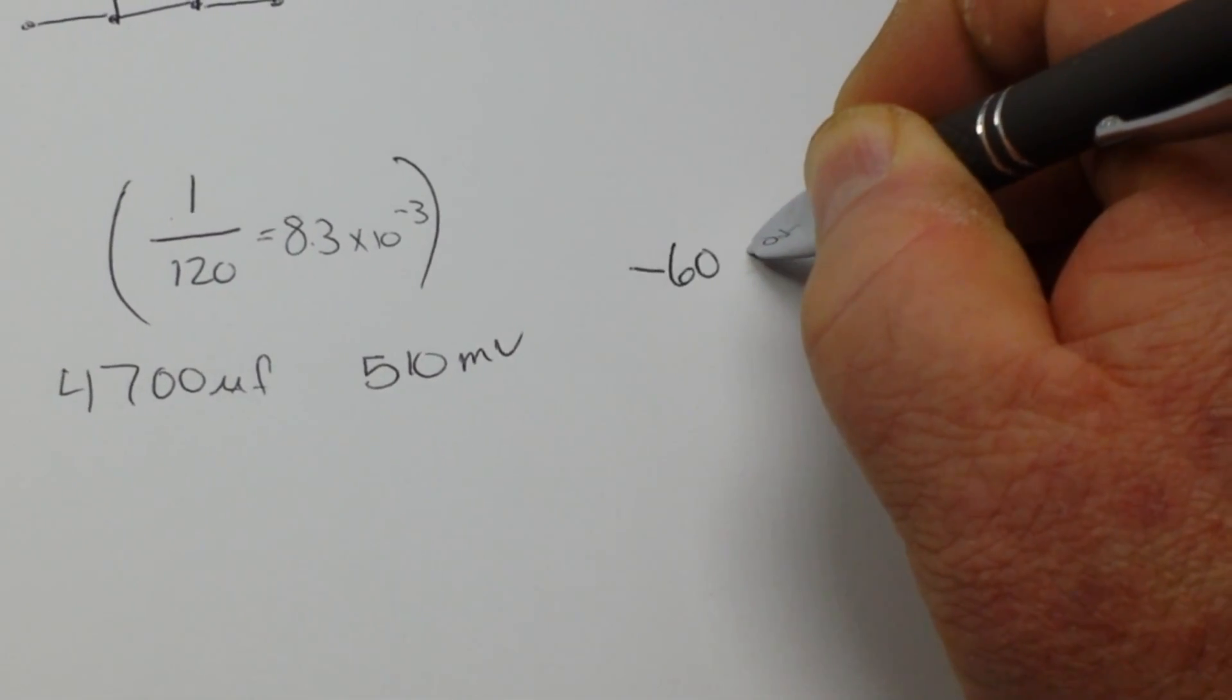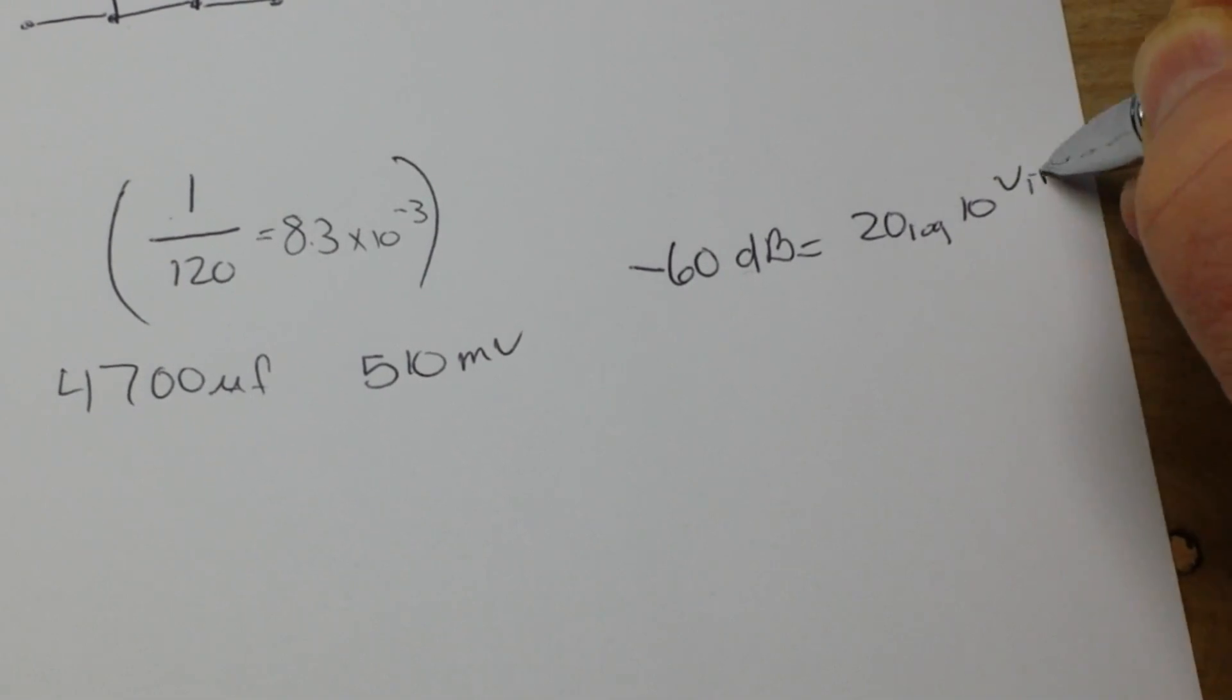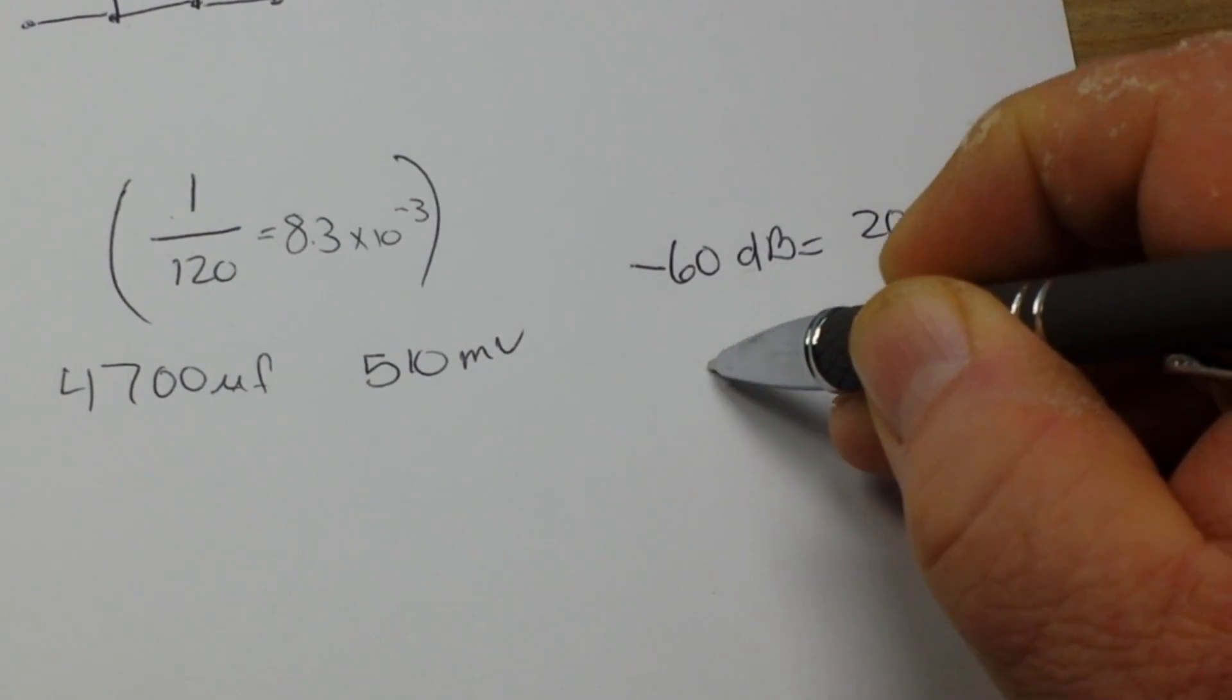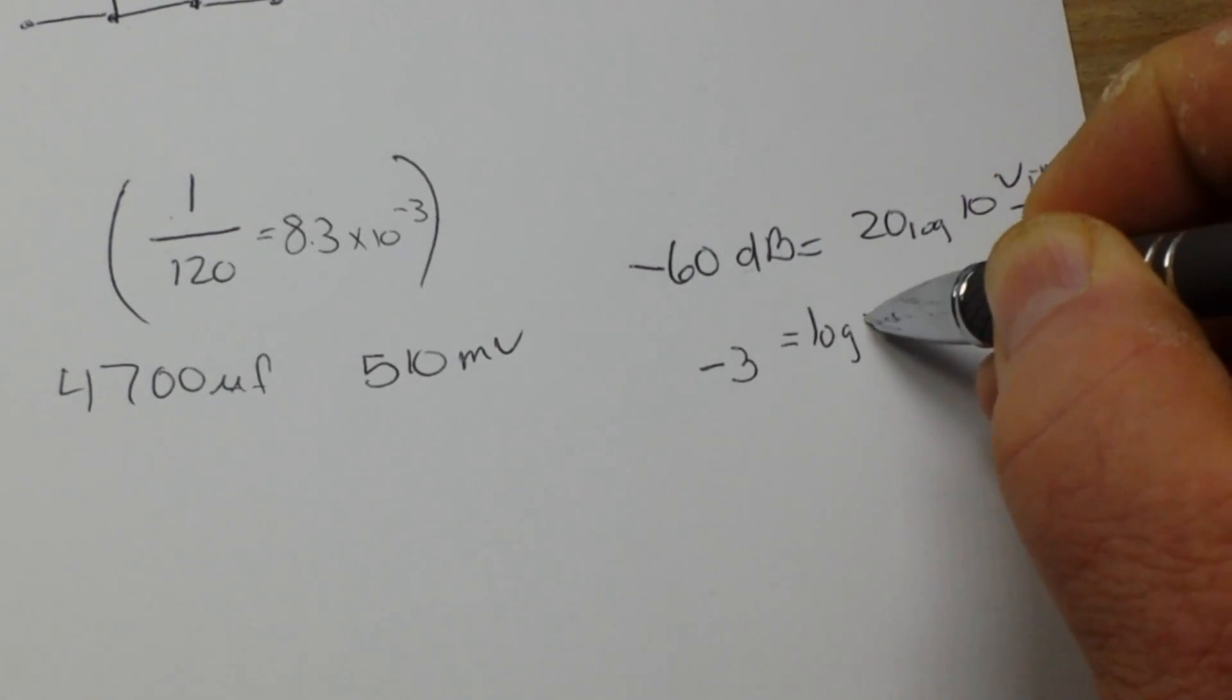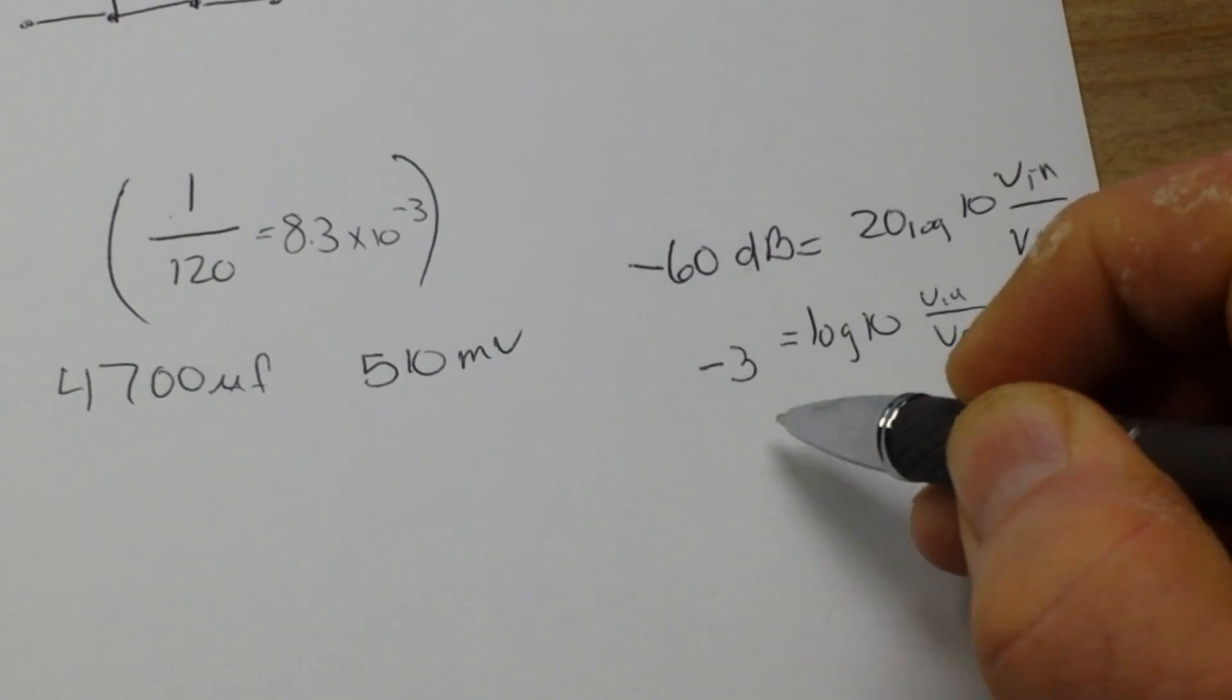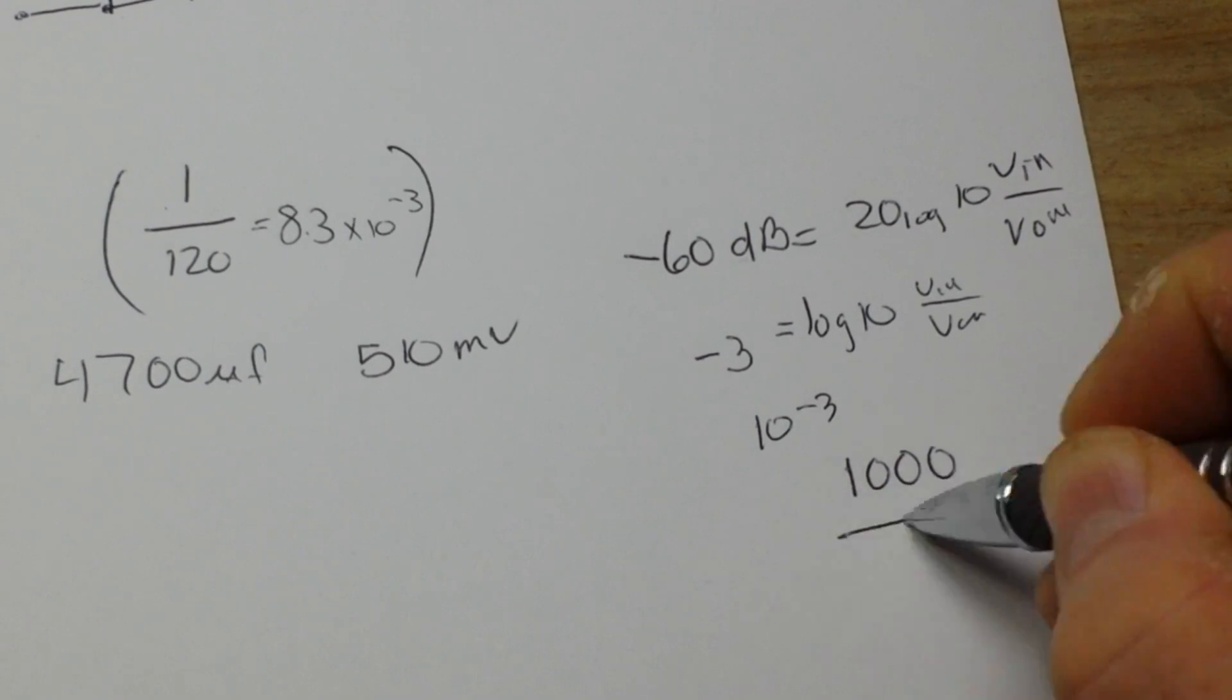So you can figure that out. You can say -60 dB, of course, is 20 log₁₀(V_out/V_in). That gives you -3 = log₁₀(V_out/V_in), or 10^-3. So that is a factor of 1000.